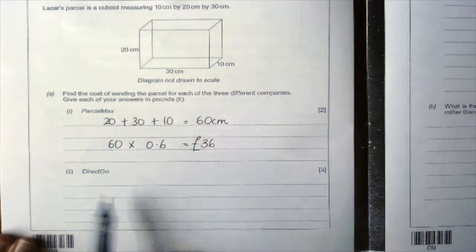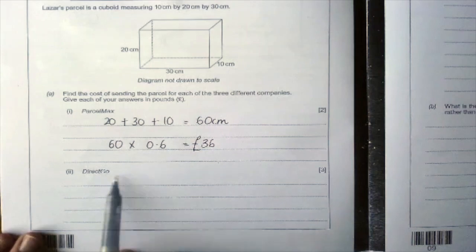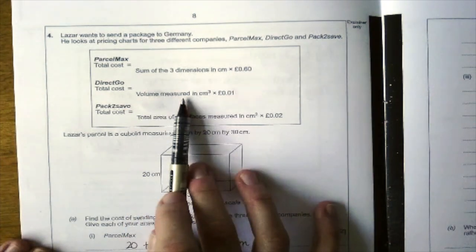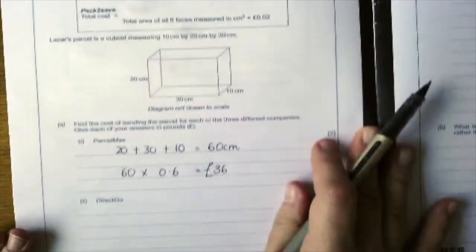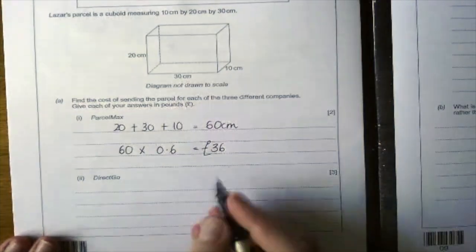Part two, you're going to do DirectGo. So DirectGo is the volume times by 0.01, so 1p.